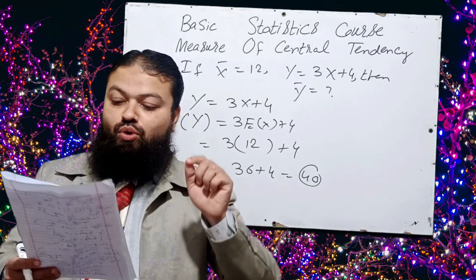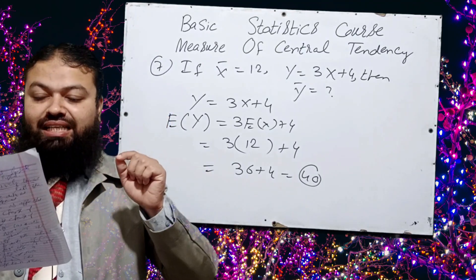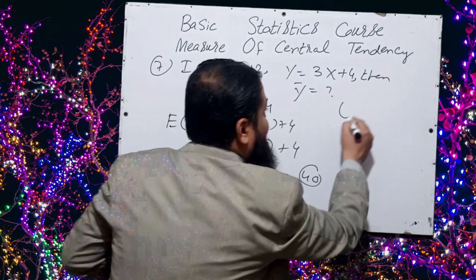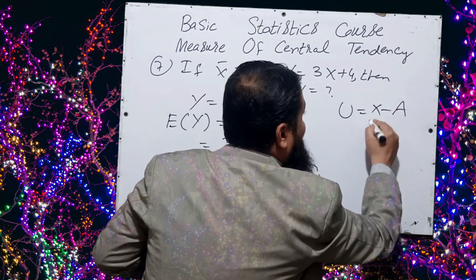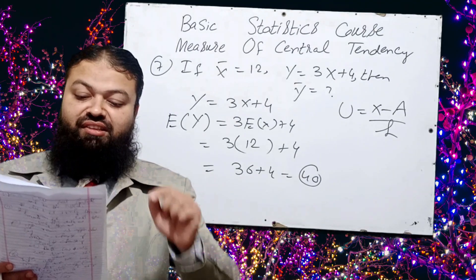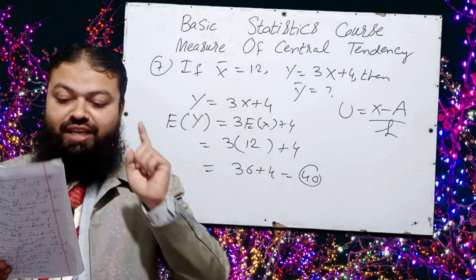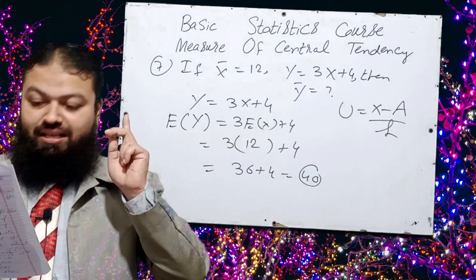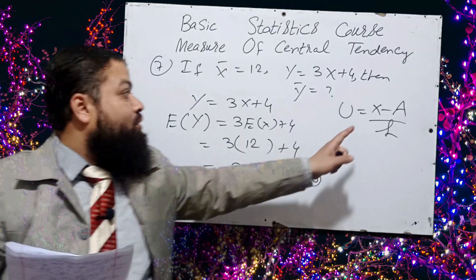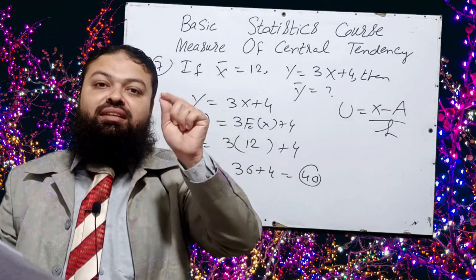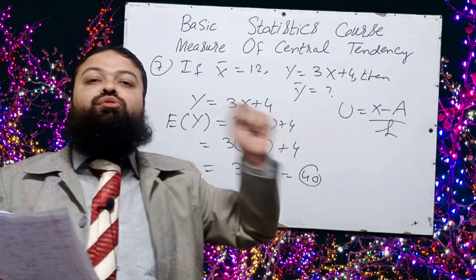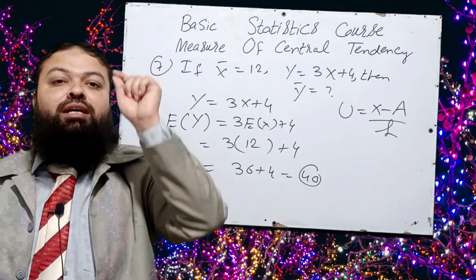Question number eight: the coding method — where u equals x minus a over h — is used for the calculation of: A: mode; B: median; C: mean; D: none of the above. The coding method is used for the computation of mean. Option C, mean, is the correct answer. Keep this in mind — it is a very important one.